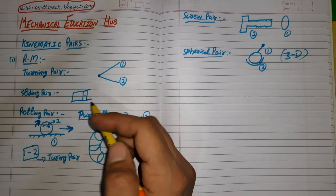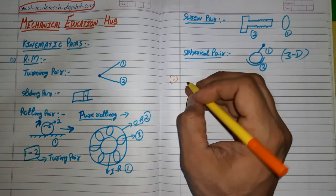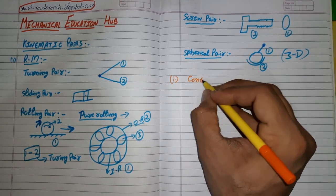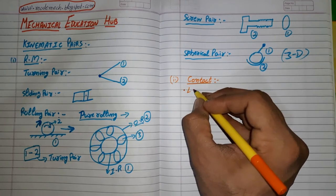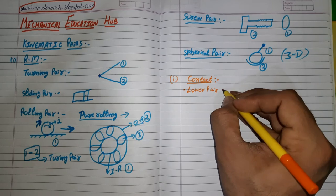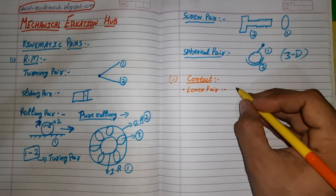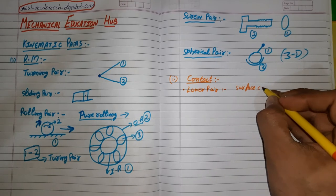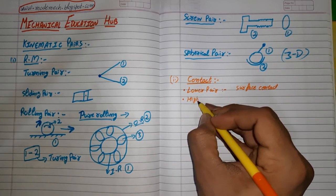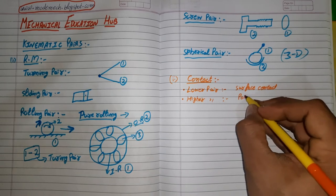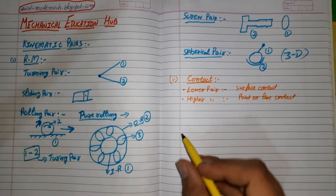Moving on to the second classification of kinematic pairs — pairs are also classified according to the type of contact. The first type is the lower pair, where there is surface contact between two links. The second type is the higher pair, where there is point contact or line contact between two links.